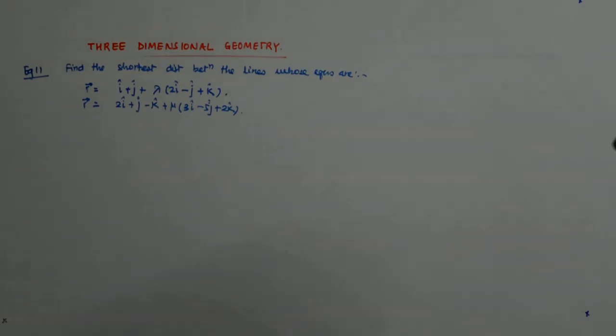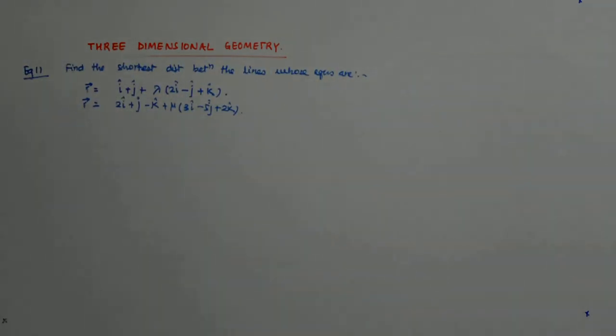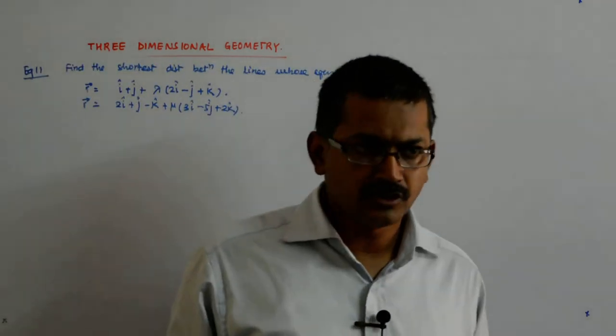So, what happens? I know that these are skew lines. Why? Because they are not parallel to the same line. Correct? So, they are skew lines.